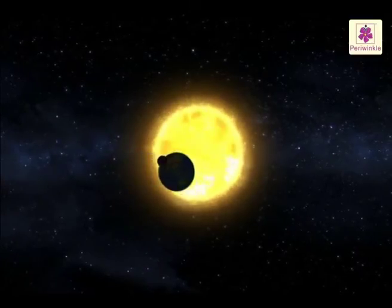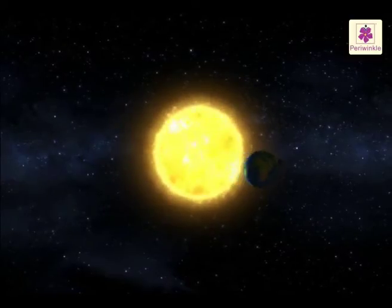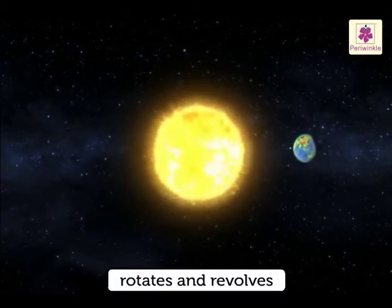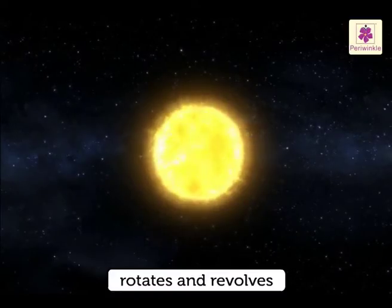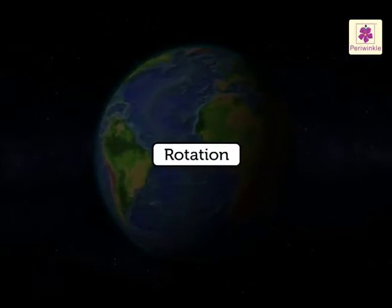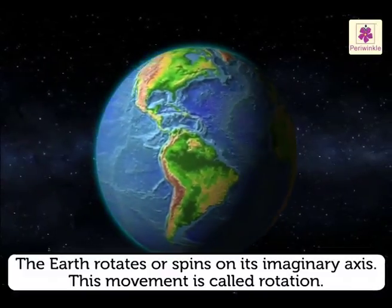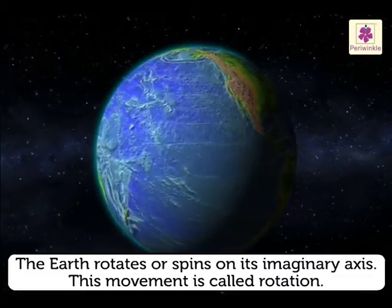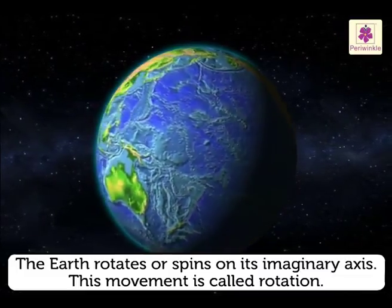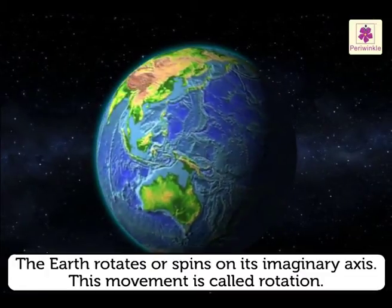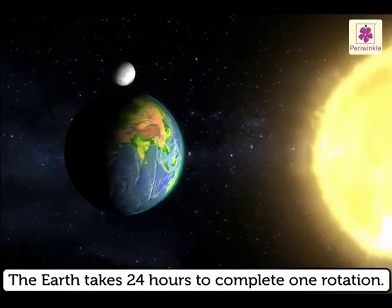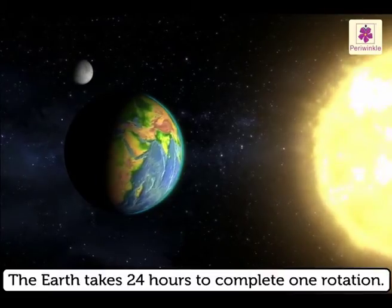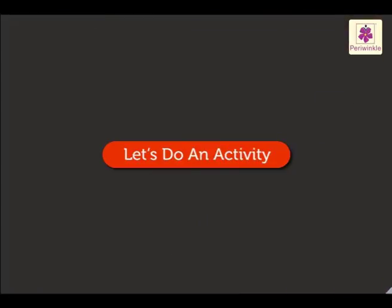The Earth is not standing still, it is moving. The Earth moves in two ways: it rotates and it revolves. Rotation: the Earth rotates or spins on its imaginary axis like a top. This movement of the Earth is called rotation. The Earth takes 24 hours to complete one rotation.